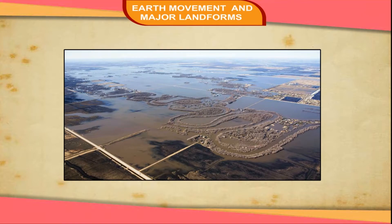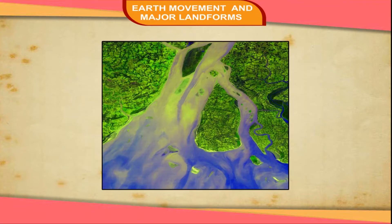As the river approaches the sea, the speed of the flowing water decreases and the river begins to break up into a number of streams called distributaries. Each distributary forms its own mouth. The collection of sediments from all the mouths forms a delta.